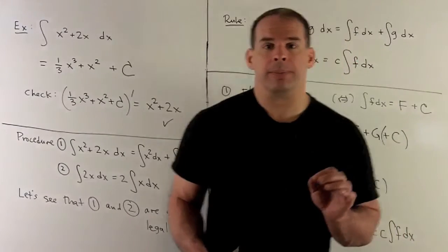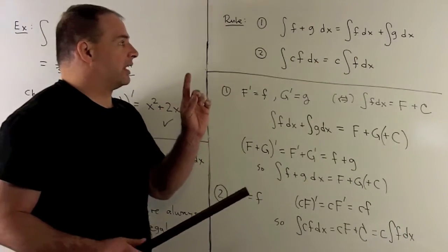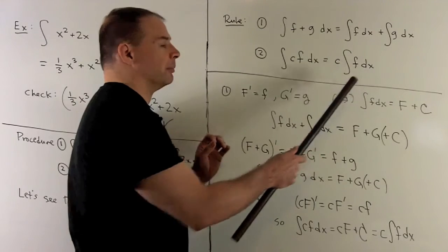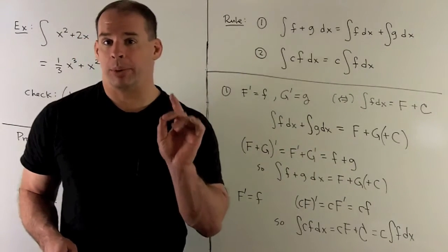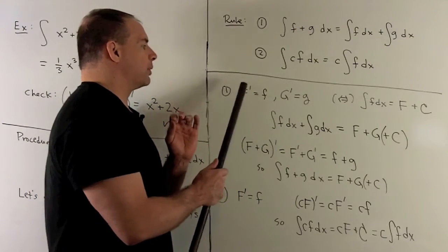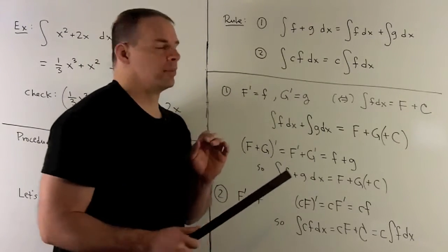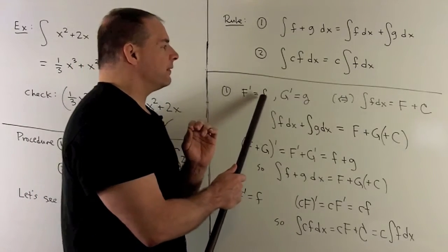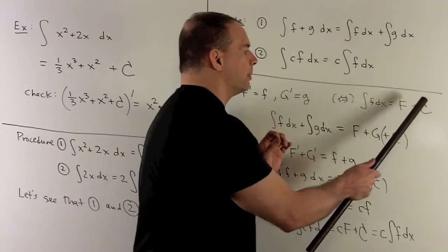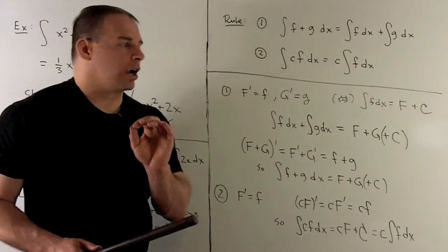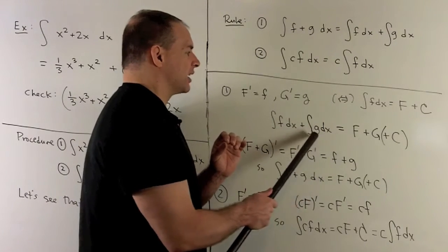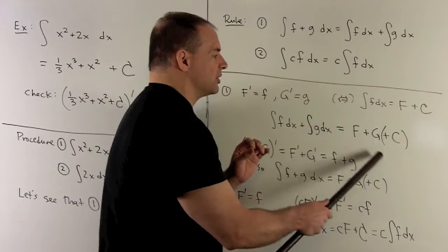Let's check that these always work out. We're allowed to break apart sums in indefinite integrals and pull out constants. The proofs are just symbol pushing. We have capital F and capital G, where F prime equals little f and G prime equals little g. Remember, if capital F prime equals little f, that's the same as saying the indefinite integral of f with respect to x equals capital F plus a constant. If we take these two indefinite integrals and add them together, the first term is capital F, the second is capital G, and we combine the constants into one constant.